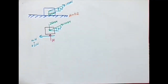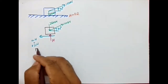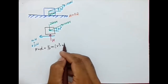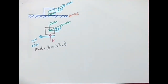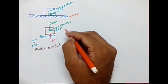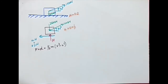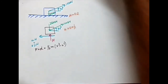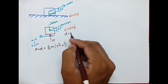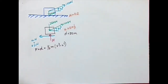The angle is 30 degrees, and we are going to apply the work-energy principle: F times D equals change in kinetic energy. Initially, the block is at rest, so the initial velocity U is zero. We want to calculate the final velocity V after the block moves a distance of 30 meters, so D equals 30 meters.